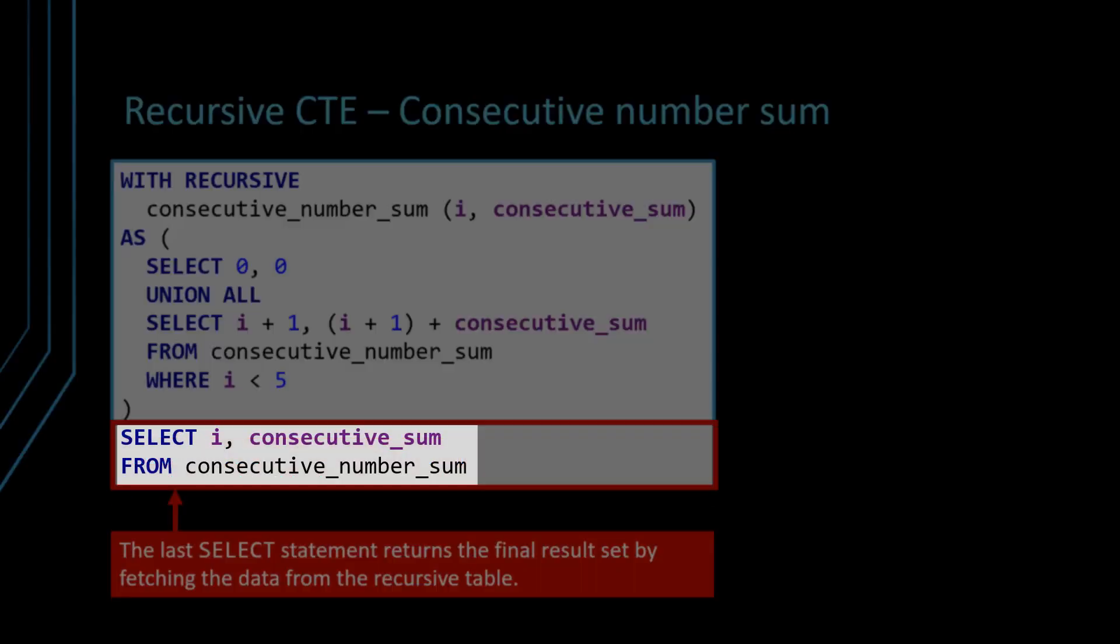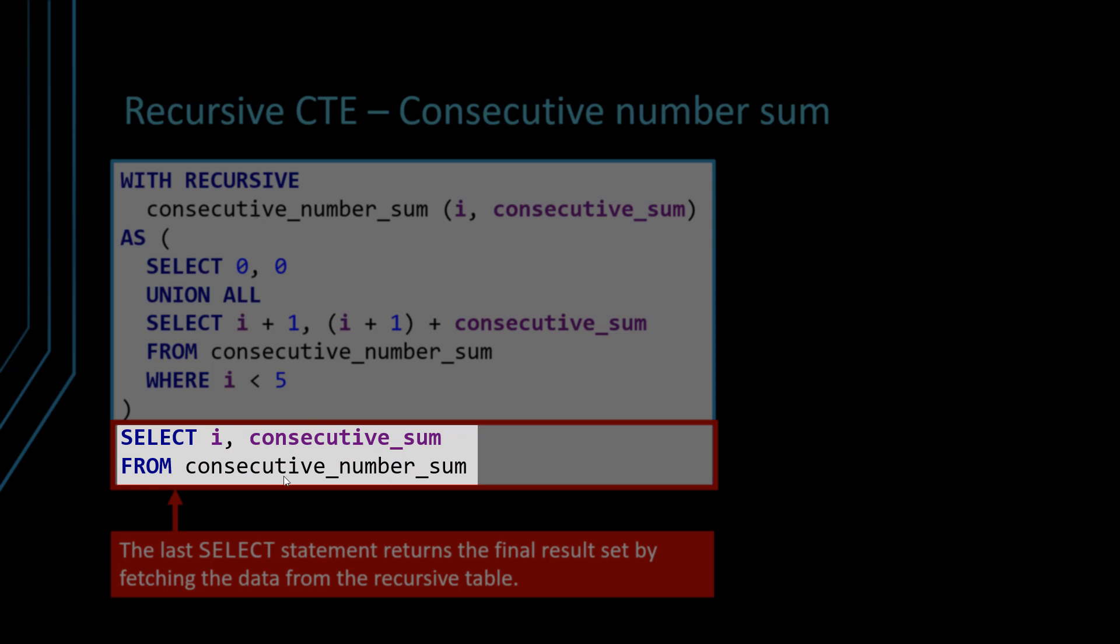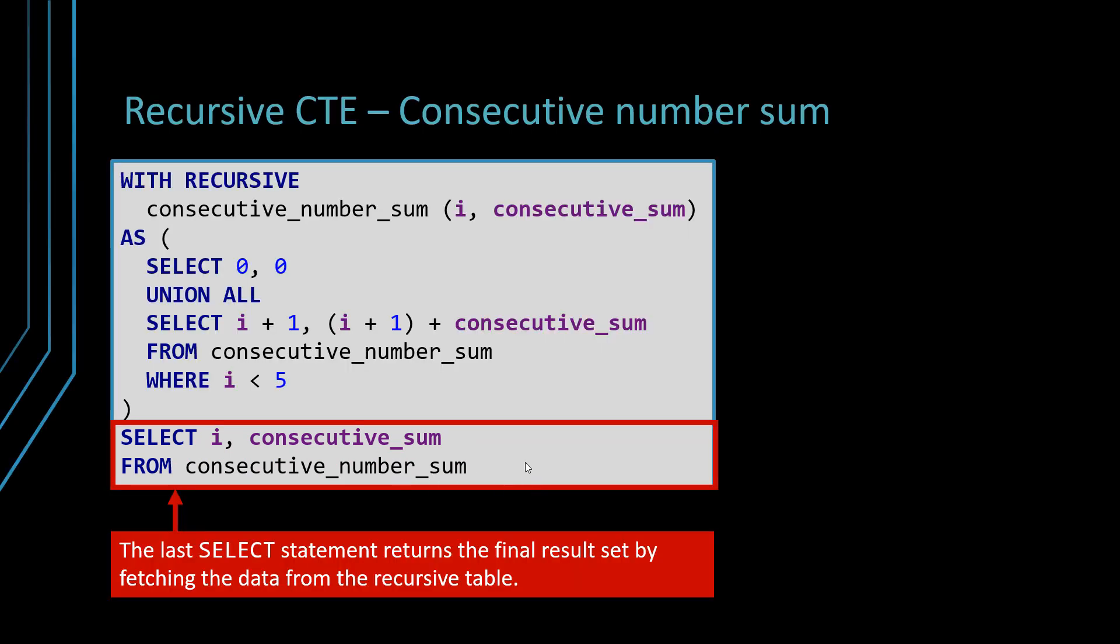And we build a result set. And in the end, of course, because this is a common table expression, you can use an alias. You can use its alias and select from it. So basically, this is how you can compute the same data that we built previously using the for loop.